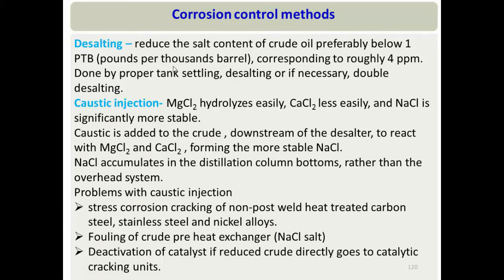Another method is caustic injection, done after desalting. After desalting, salt content is much lower but still present. The goal is to convert remaining magnesium chloride and calcium chloride into sodium chloride, since sodium chloride is stable at higher temperatures and won't hydrolyze to form HCl. This is achieved by injecting caustic — NaOH — which reacts with MgCl₂ and CaCl₂ to form NaCl.